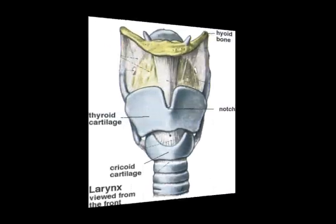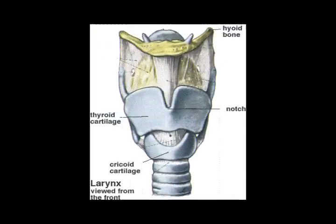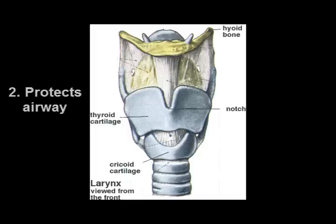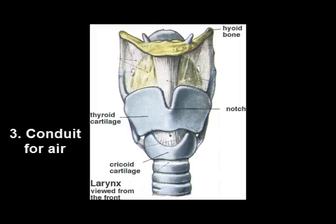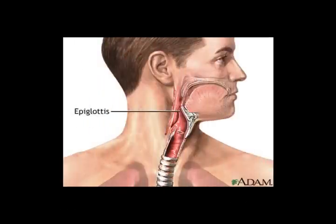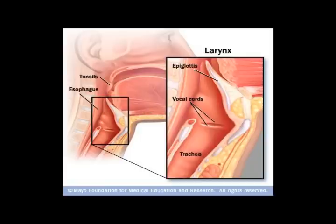Let's go through to the voice box, or the larynx. The larynx has three functions: it helps to produce sound, it prevents food and foreign substances from entering the airways, and it's a passageway for air during breathing. It's mostly cartilage, but it also has some smooth muscle and ligaments. It contains the epiglottis — a cartilage flap that looks like a toilet seat cover — which flaps down and covers the larynx to keep food and foreign substances from entering the lungs.